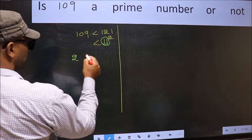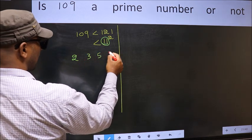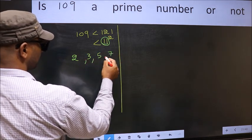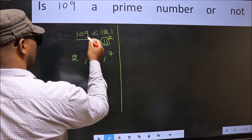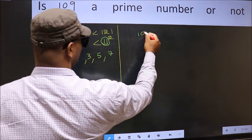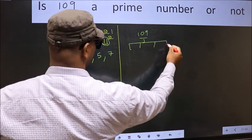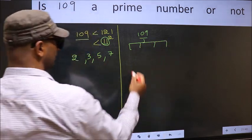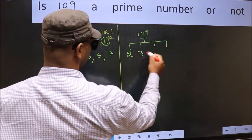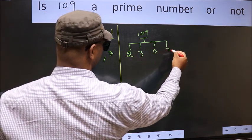They are 2, 3, 5 and 7. Now for the given number check divisibility with these numbers that is 2, 3, 5 and 7.